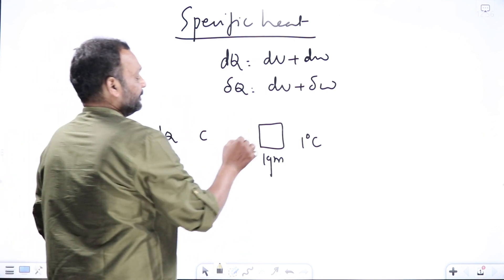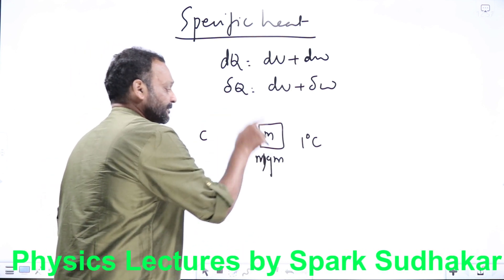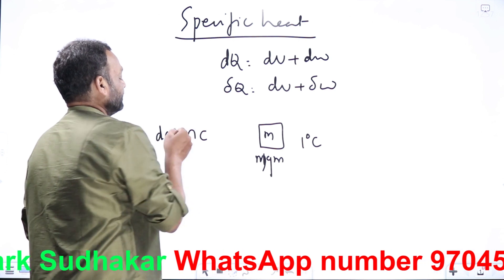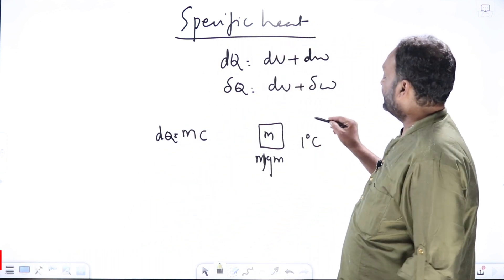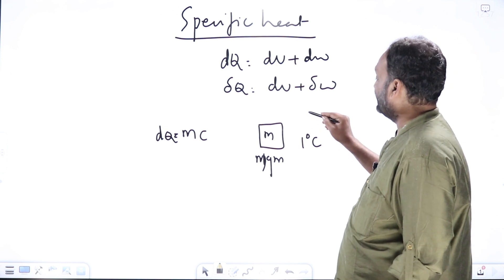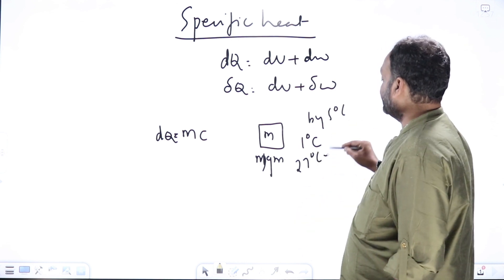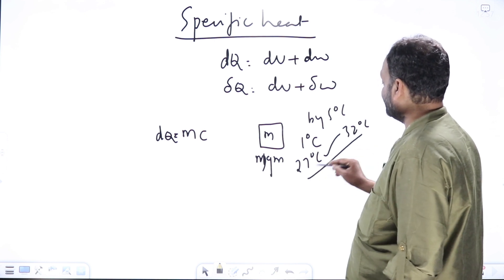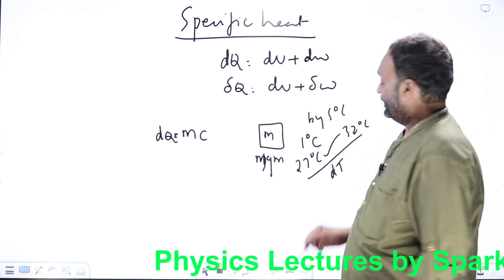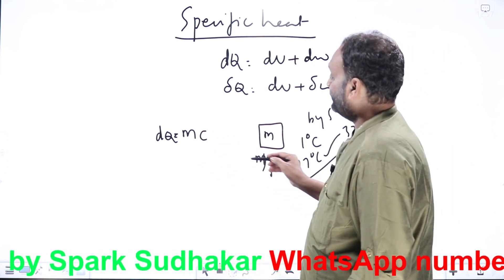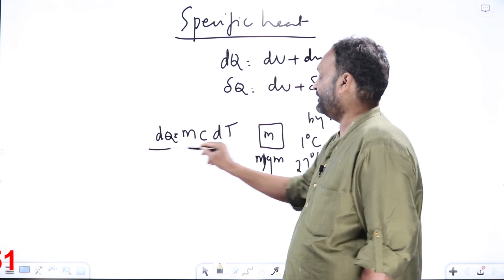Instead of one gram, if we have M grams of substance, the total amount of heat required to raise the temperature through one degree Celsius is M times C. If we want to raise the temperature by DT degrees Celsius, the total heat required is DQ equal to M C DT.